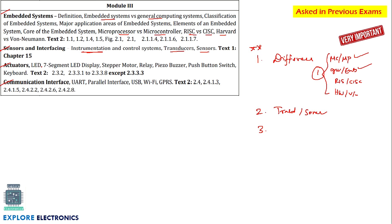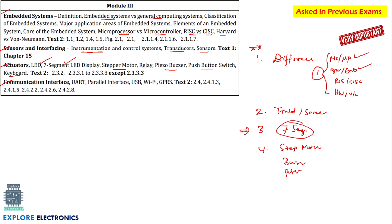Coming to the actuator chapter, the very important questions are LED, seven-segment display, and stepper motor. Seven-segment display is very very important and stepper motor is also very important — do not skip these. Relay, buzzer, push button switch — all of these have a block diagram connected to a microcontroller. Out of these, seven-segment display and stepper motor are top priority, followed by buzzer and push button switch. Keyboard is rarely asked as it is a complex topic.